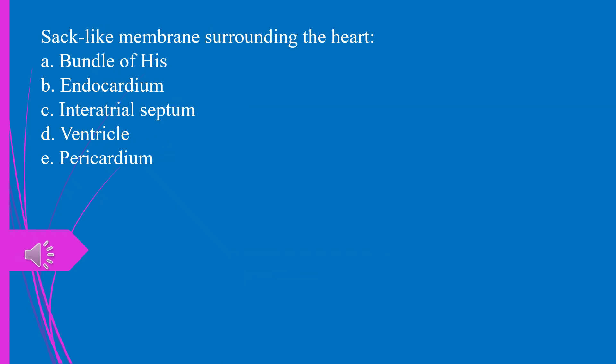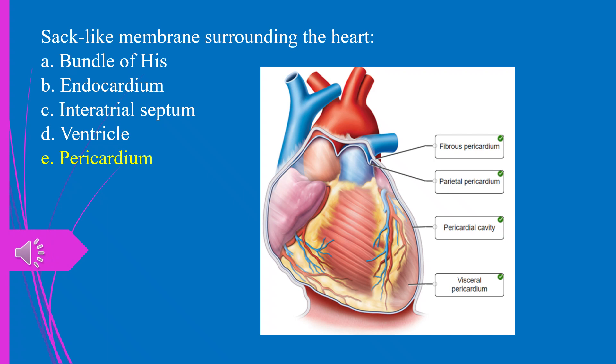Question 27. Sac-like membrane surrounding the heart: a) bundle of His, b) endocardium, c) interatrial septum, d) ventricle, e) pericardium. The answer is e, pericardium.